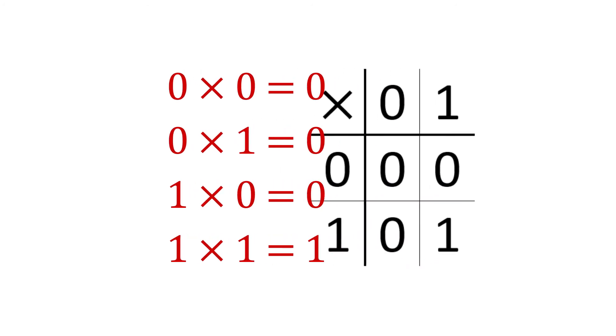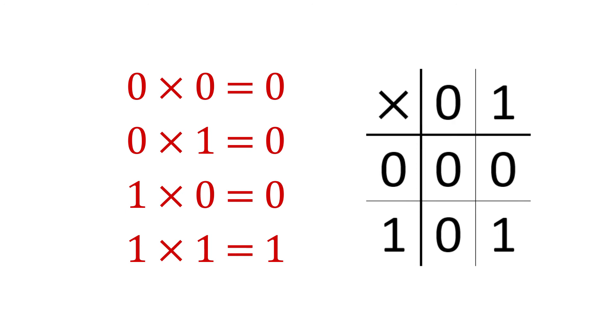Multiplication also has four rules. Here are the four rules for multiplying bits: 0 times 0 is 0, 0 times 1 is 0, 1 times 0 is 0, 1 times 1 is 1. That's the entire binary multiplication table.